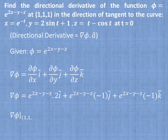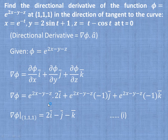Del φ at the given point (1, 1, 1) equals 2î - ĵ - k̂. Call this equation 1. We have substituted x = y = z = 1, giving us del φ = 2î - ĵ - k̂. Now we are going to find the unit tangent vector â.